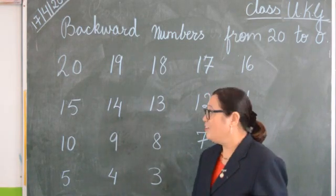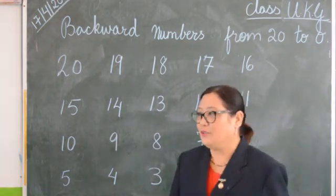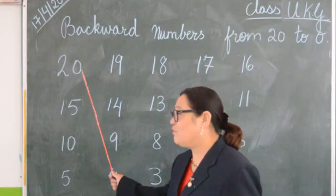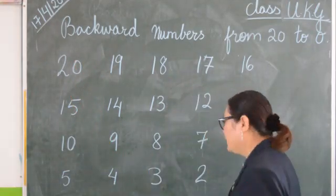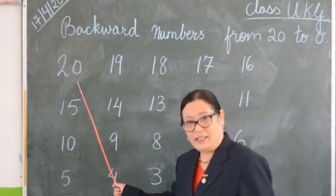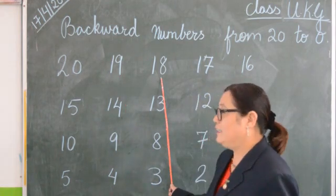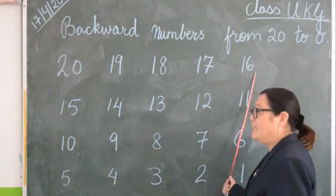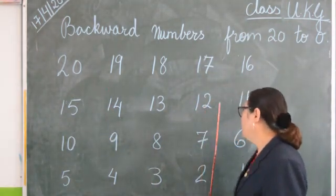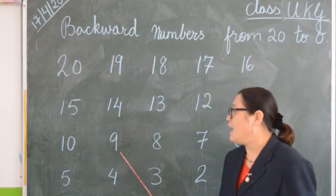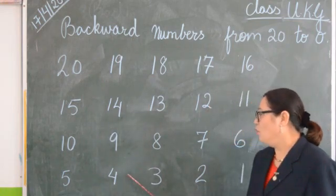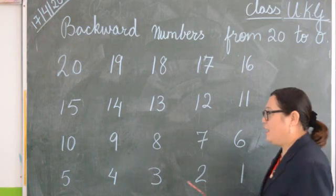Very good. Once again we will say. Please repeat after me. These are the big numbers. From big numbers — 20 is the big number — so we will start from 20 to 0. Let's start again. 20, 19, 18, 17, 16, 15, 14, 13, 12, 11, 10, 9, 8, 7, 6, 5, 4, 3, 2, 1, 0.